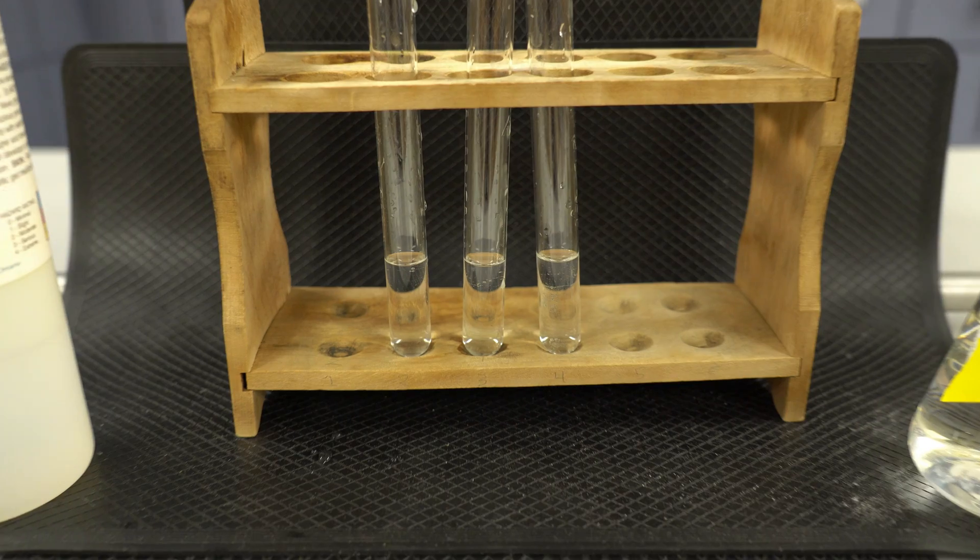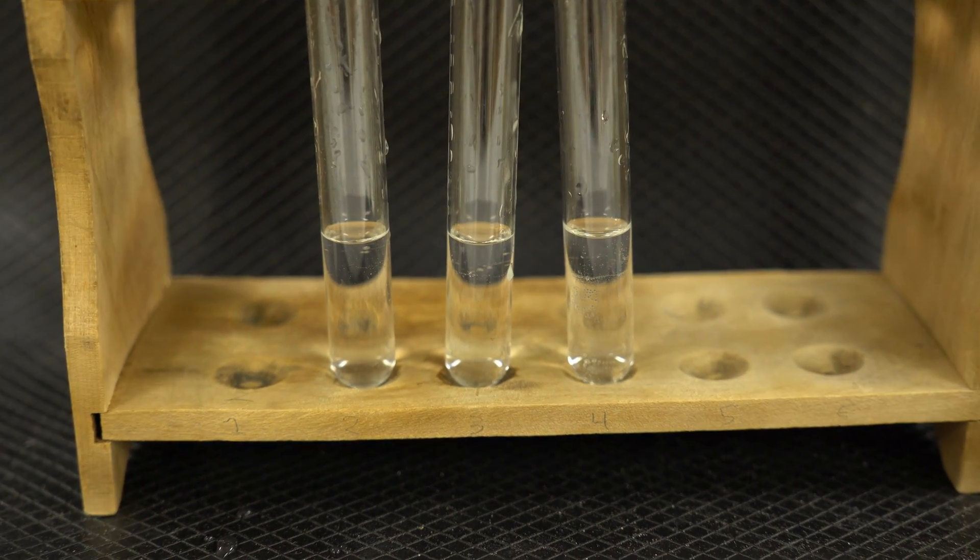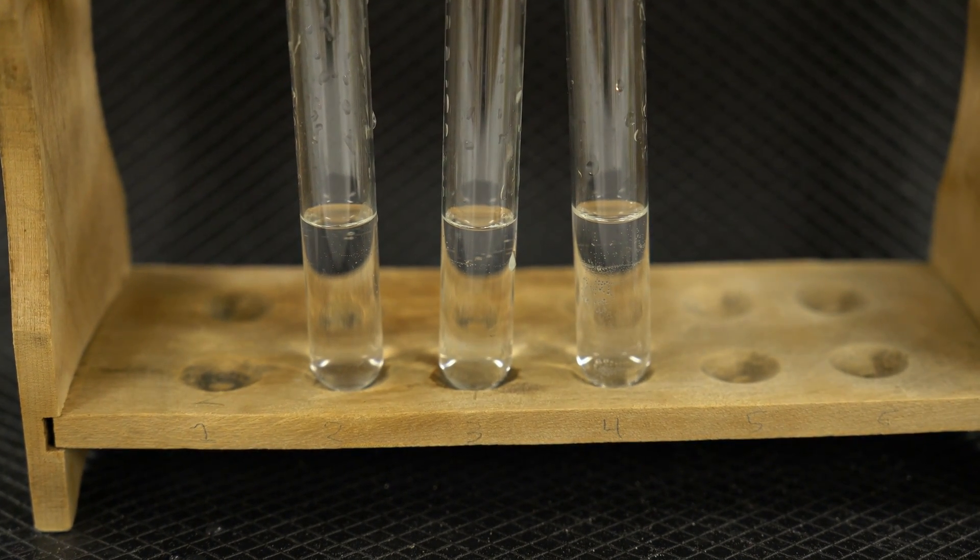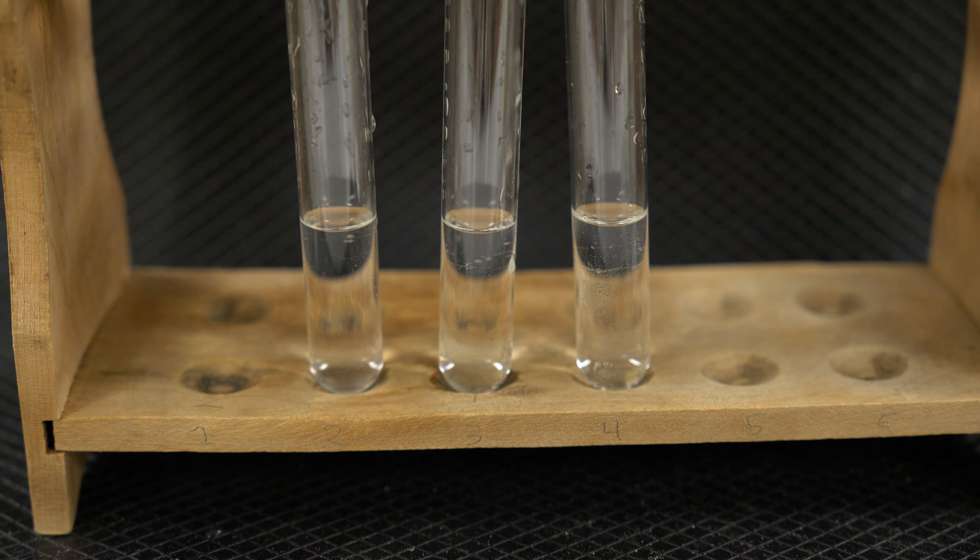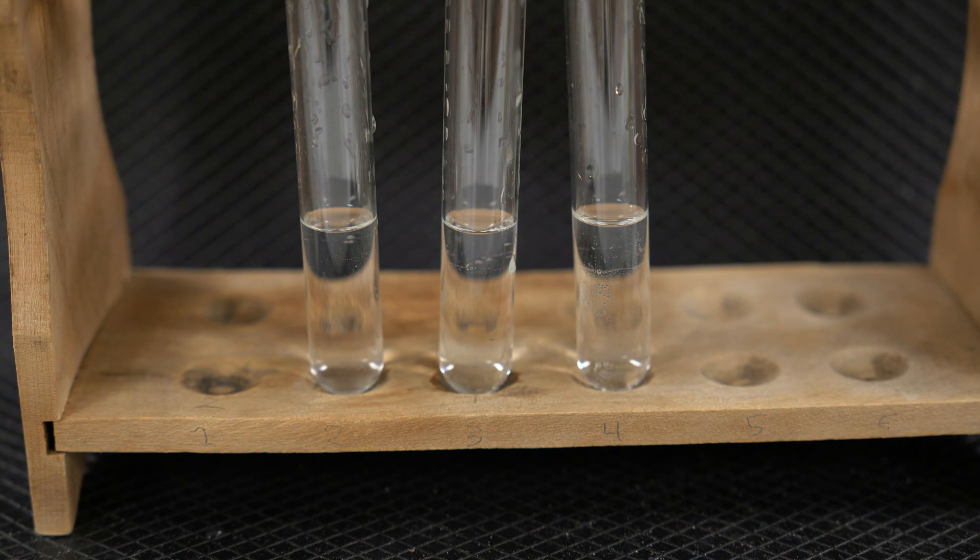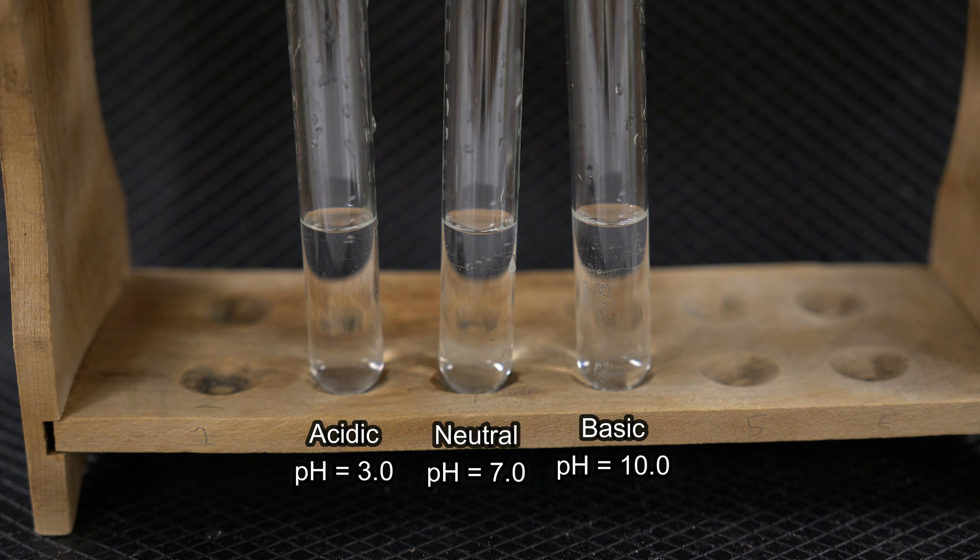So now I have prepared equal-sized potato pieces. We're going to add them to this hydrogen peroxide that has had its pH adjusted to either lower, normal, or higher, and see how they react.